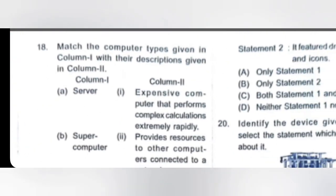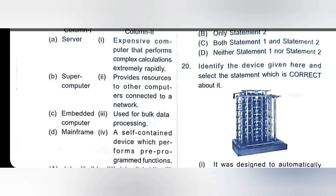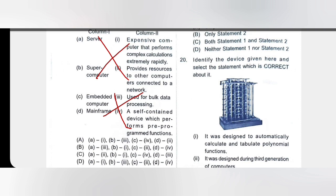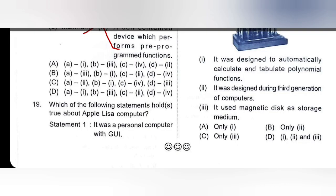Map the computer types given in column one with their descriptions. Server: provides resources to other computers connected to a network. Supercomputer: expensive computer that performs complex calculations extremely rapidly. Embedded computers: self-contained device which performs pre-programmed functions. Mainframes: used for bulk data processing. Looking at the options, C is the right option.